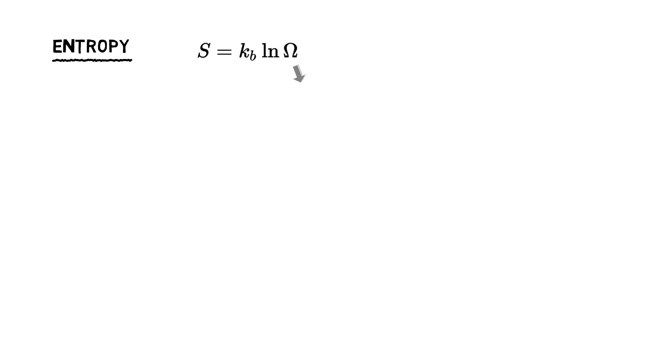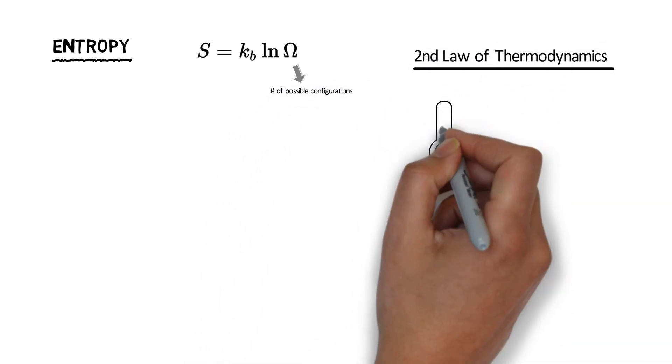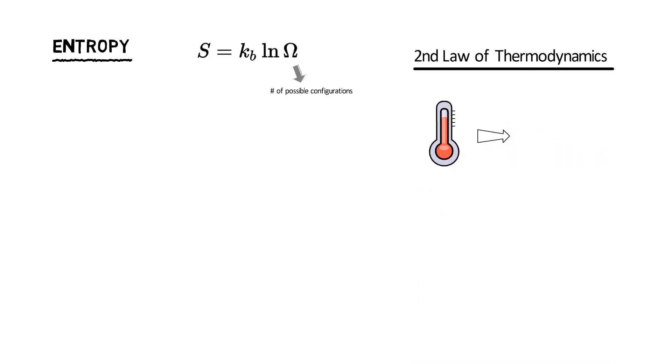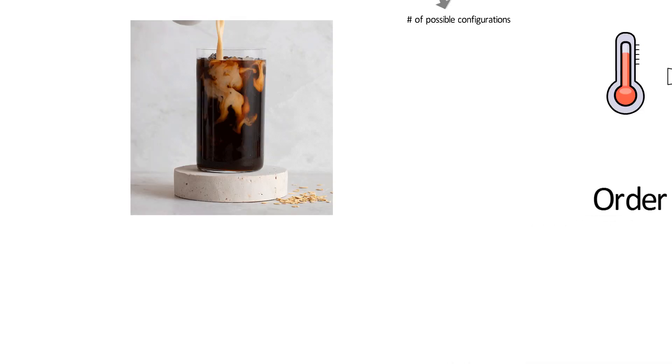Entropy is a measure of disorder or chaos in the universe. The second law of thermodynamics states that just like energy is always flowing from hot objects to cold objects, at the microscopic level everything is constantly changing from order towards chaos.